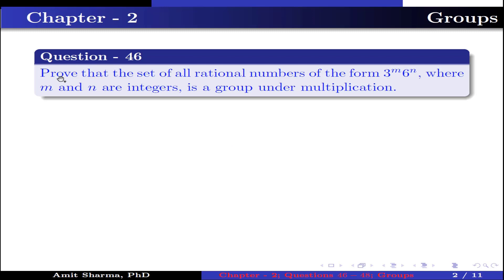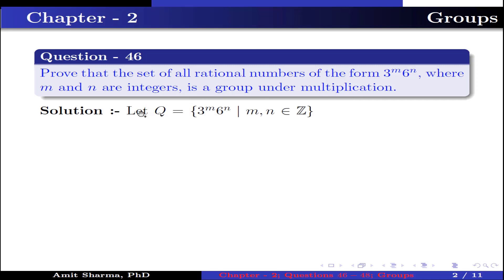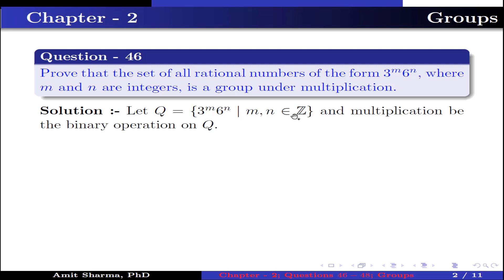Question number 46: prove that the set of all rational numbers of the form 3 to the power m times 6 to the power n, where m and n are integers, is a group under multiplication. Let Q contain elements of the type 3^m · 6^n where m and n are integers, and let multiplication be the binary operation on Q.